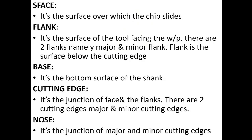Face: it is the surface over which the chip slides. Flank: it is the surface of the tool facing the workpiece. There are two flanks — major and minor flank. Flank is the surface below the cutting edge. Base: it is the bottom surface of the shank. Cutting edge: it is the junction of the face and the flanks. There are two cutting edges — major and minor. Nose: it is the junction of the major and minor cutting edges.